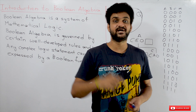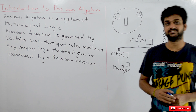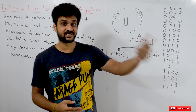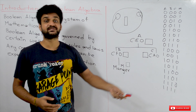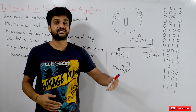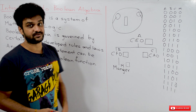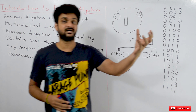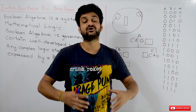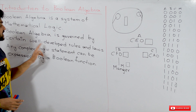Coming to this class, we will try to have an introduction to Boolean algebra. So what is Boolean algebra? Boolean algebra is a system of mathematical logic. As we have seen, ordinary algebra is also a system of mathematical logic, and the binary number system is also a system of mathematical logic. In the same way, Boolean algebra is also a system of mathematical logic. It has its own mathematical logics and is governed by certain well-developed rules and laws, just as we have seen in ordinary algebra during secondary school.